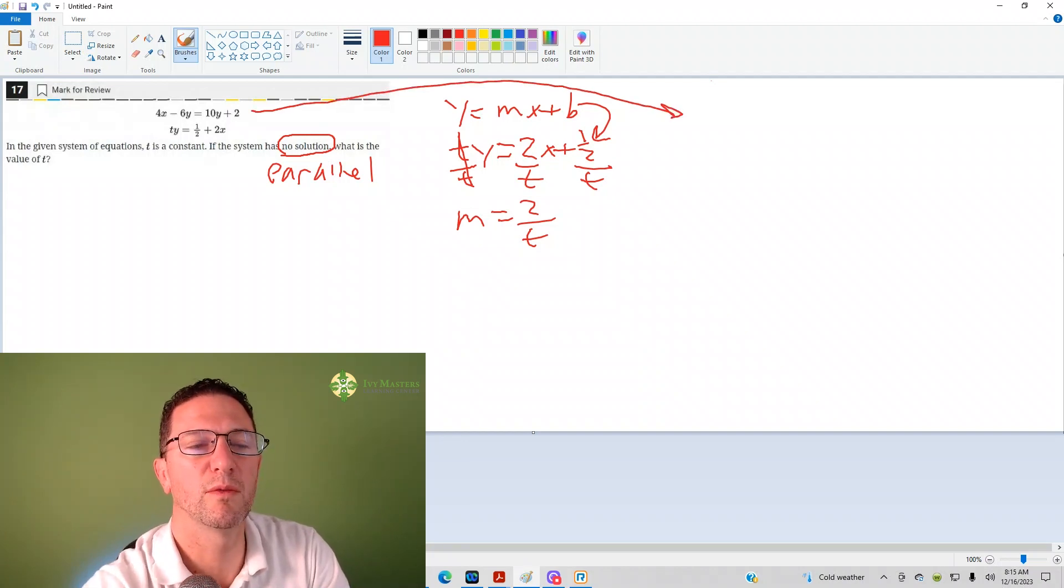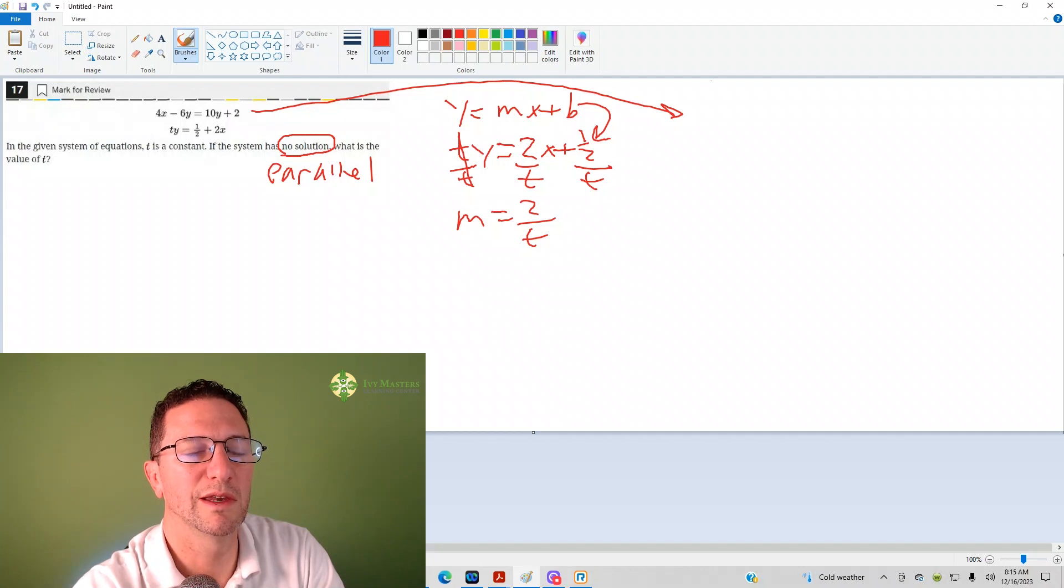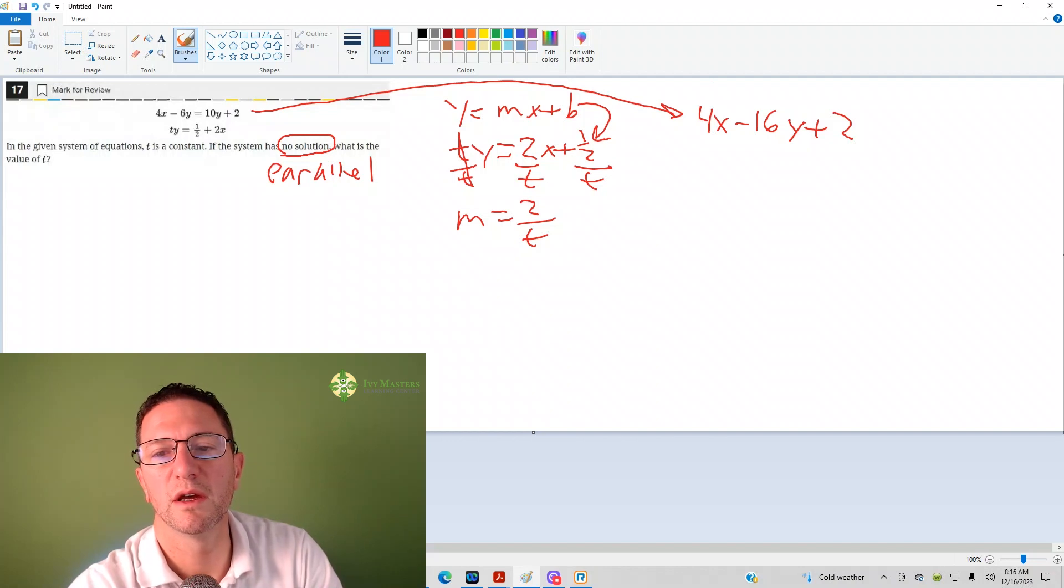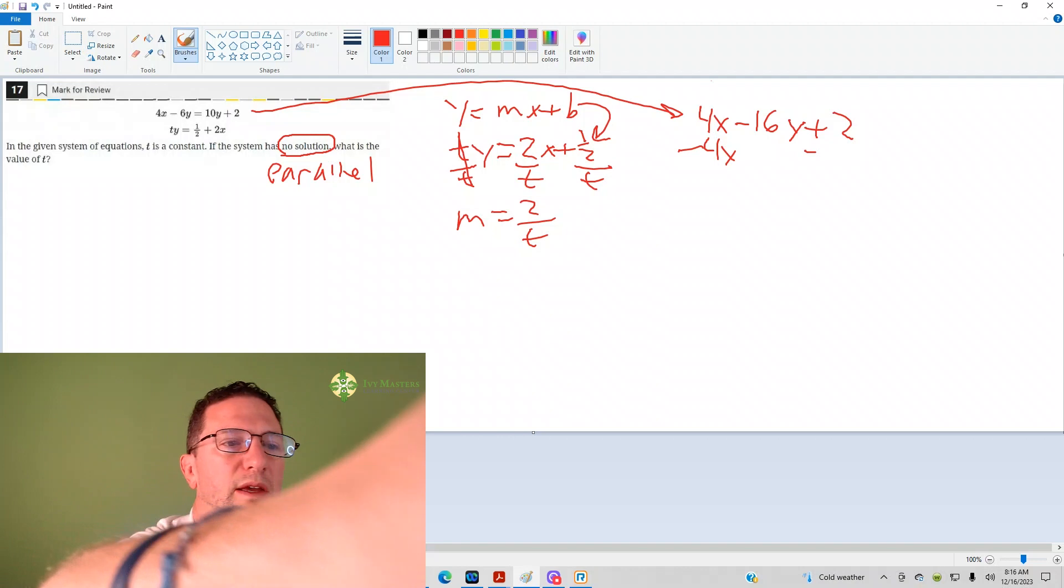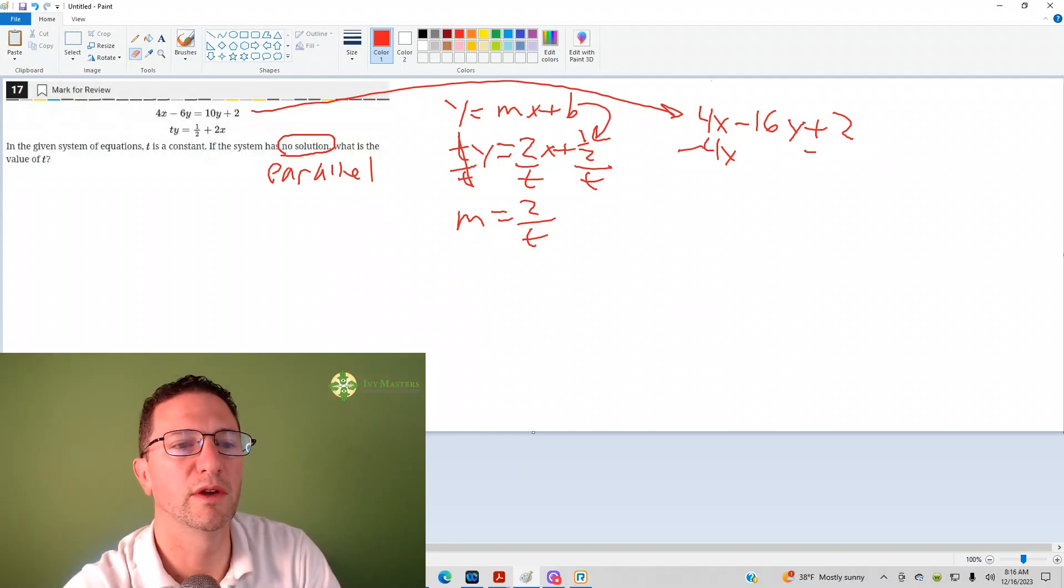Now, let's look at this equation again in the form y equals mx plus b. To get the y alone, what I'm also going to do at first is I'm going to just subtract 10y from both sides, which is giving me negative 16y equals 4x plus 2.